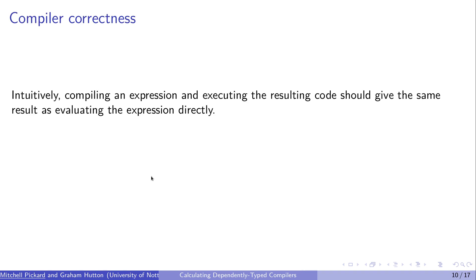Now how do we know that the compiler we generate at the other end is going to be correct? So intuitively, we know that compiling an expression and then executing it should give you exactly the same result as just evaluating the expression directly using the evaluation function from before. And we can capture this in an actual compiler correctness condition. So for some expression E, if we compile it and then execute it on some stack S, that is the same as evaluating it directly and then just pushing it onto the stack.